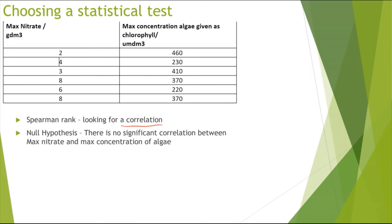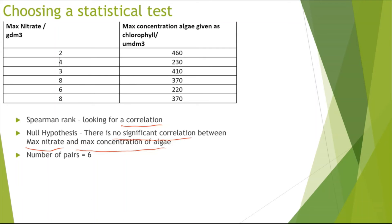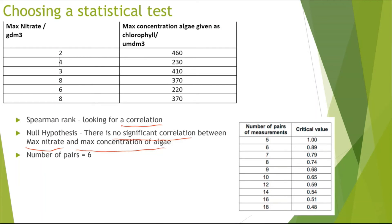We could be asked about the null hypothesis. In this case, because we are looking at a correlation, we would say there is no significant correlation between the max nitrate concentration and the max concentration of algae. To find the critical value, first we look at the number of pairs — in this case 6 — and looking at my critical value table I get 0.89.